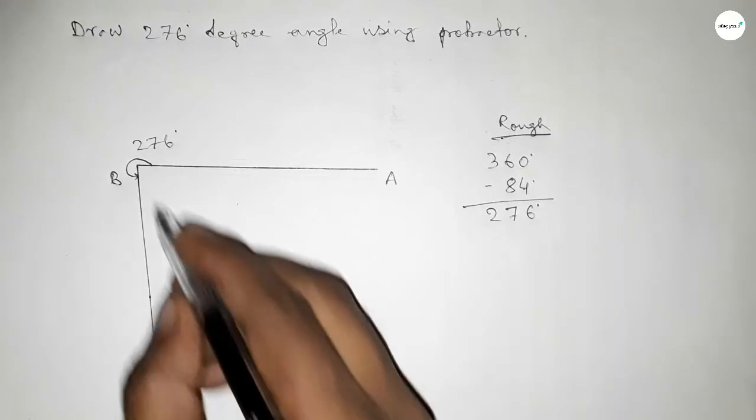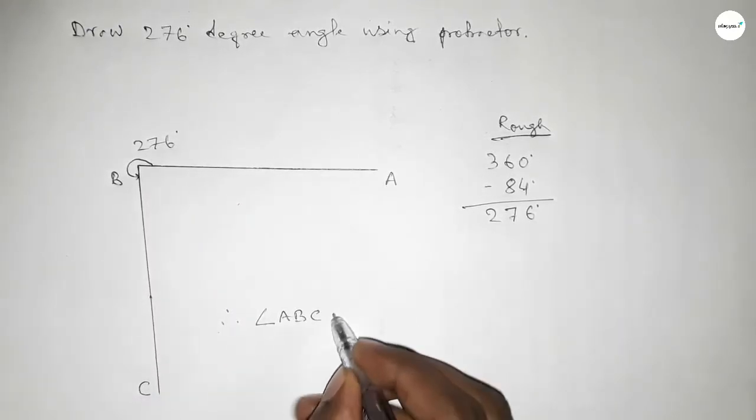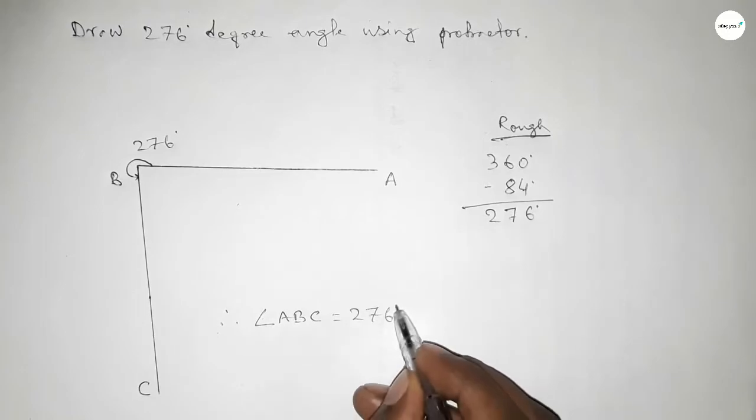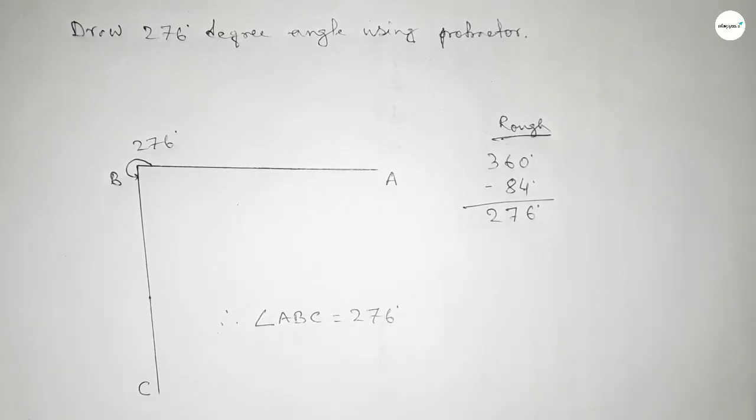Therefore angle ABC equal to 276 degree angle. That's all, thanks for watching. If this video is helpful to you, then please share it with your friend. Thanks.